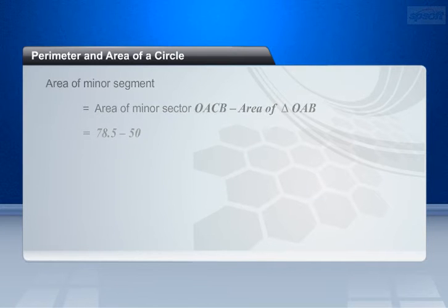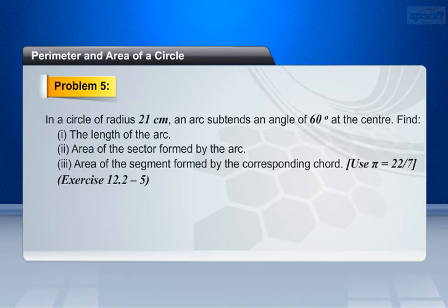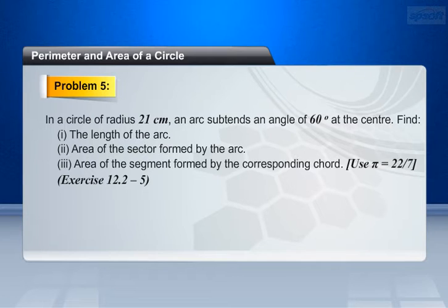Problem 5. In a circle of radius 21 cm, an arc subtends an angle of 60 degrees at the center. Find: the length of the arc, the area of the sector formed by the arc, and the area of the segment formed by the corresponding chord. Use pi equals 22 by 7.